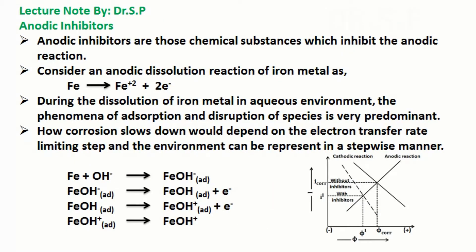The next type of inhibitors are anodic inhibitors. Anodic inhibitors are those chemical substances which inhibit the anodic reaction. Let's consider an anodic dissolution reaction of iron metal as shown here.